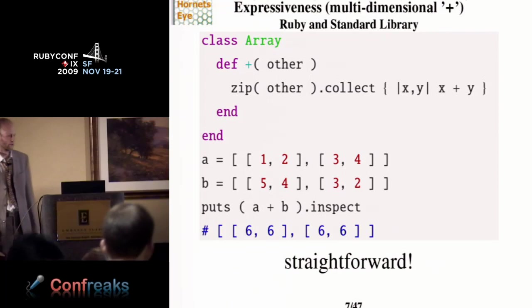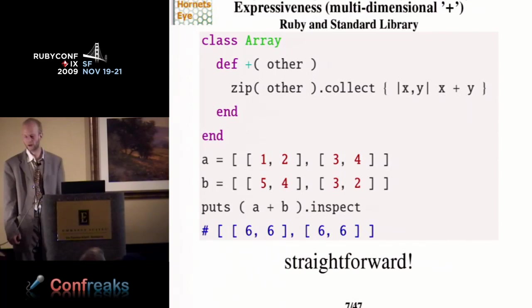And if you do the same thing in Ruby, with less than 10 lines of code, you can have a working version of an array operator already, which runs on multidimensional arrays.